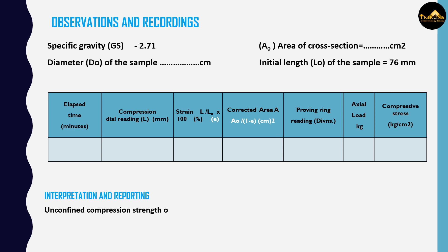Unconfined compression strength of the soil is given by: σ = Load / Corrected Area, and shear strength of the soil = σ / 2.